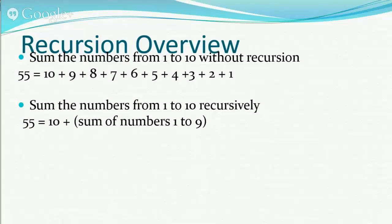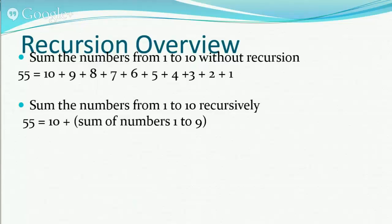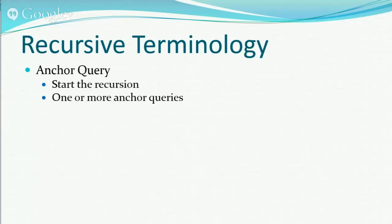What is recursion? Summing numbers from 1 to 10 non-recursively is just 10+9+8+...+1 = 55. With recursion it's like saying: give me 10 plus the sum of numbers 1 through 9, and then each level calls the next, processing through the code. In CTEs, recursion starts with what's called the anchor query — you can have one or more anchor queries. Then you have the recursive part that gets repeated for each level as it walks through a hierarchy.